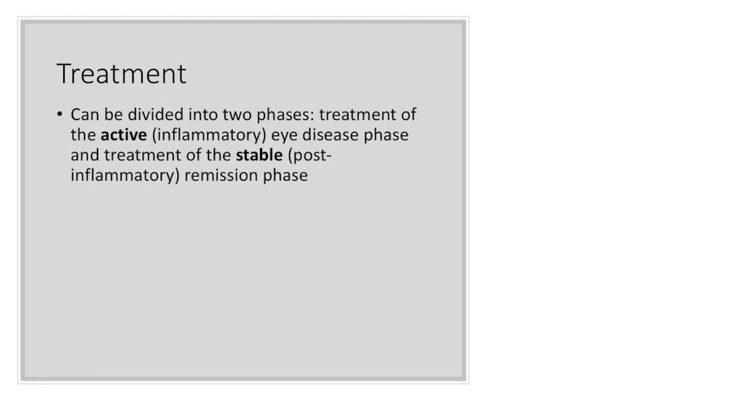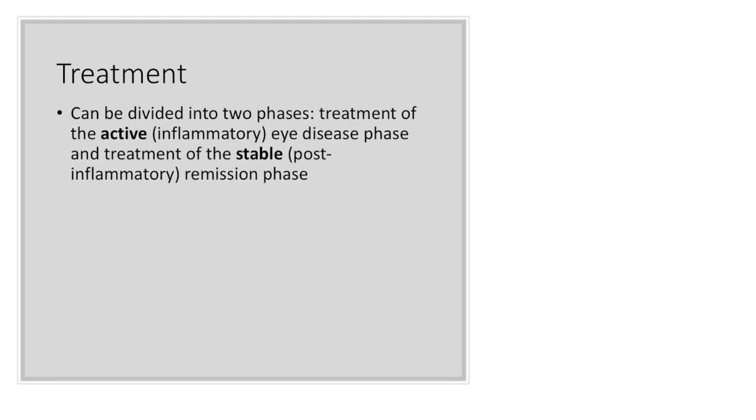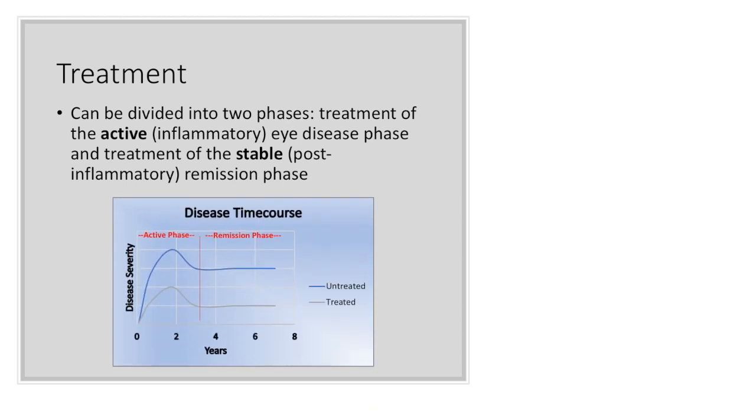Now that we have a way to diagnose thyroid eye disease, as well as disease activity and severity, we should discuss treatment. Treatment can be divided into two phases: treatment of the active, inflammatory eye disease phase, and treatment of the stable, post-inflammatory remission phase. The active period can last up to 2-3 years and requires careful monitoring until stable.